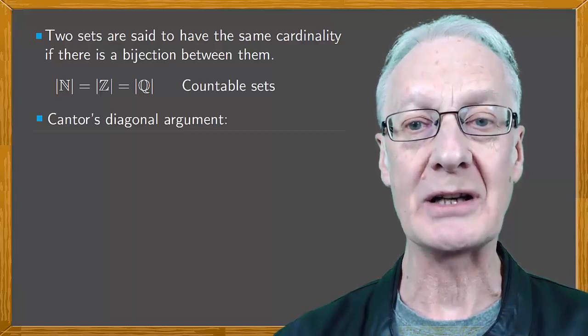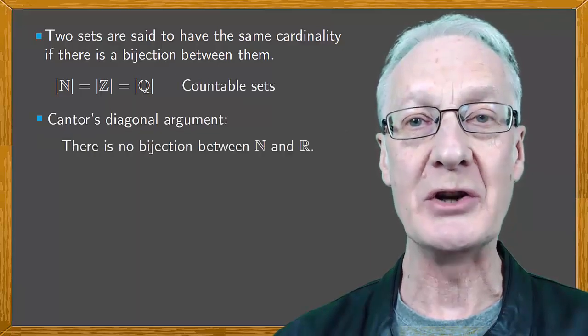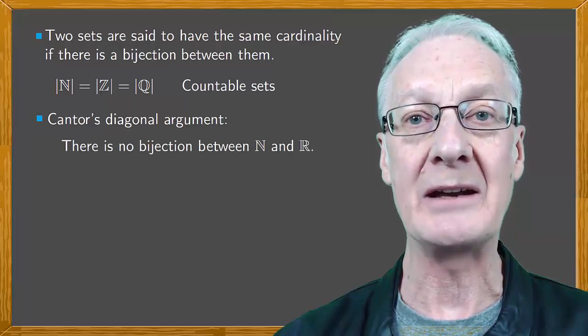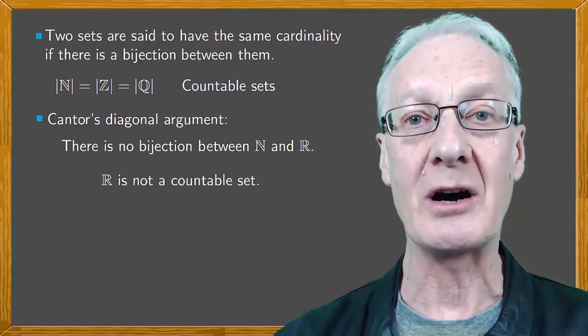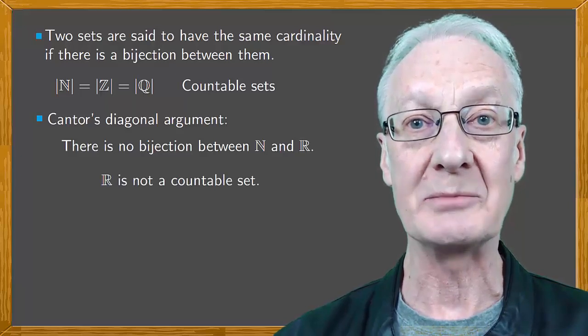Cantor's famous diagonal argument shows that there's no bijection between N and R, the set of real numbers. In other words, R is not a countable set.